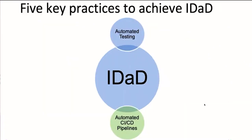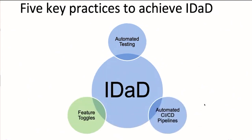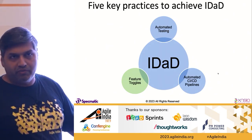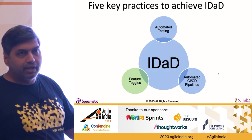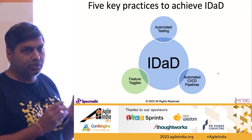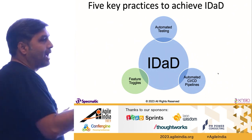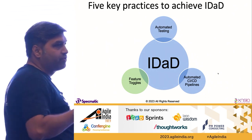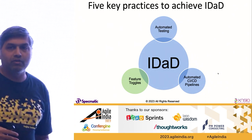Automated CI/CD pipelines — again, no problem there, that's well understood. Feature toggles is an idea that's not very well understood, but I think most people know what it means and why it's important. If you want to independently deploy things, you need the ability to manage what is visible and what is not visible.